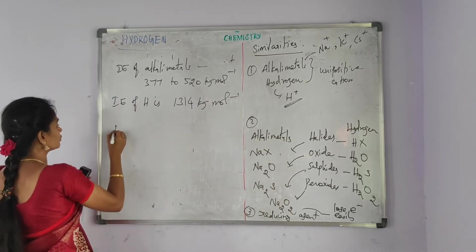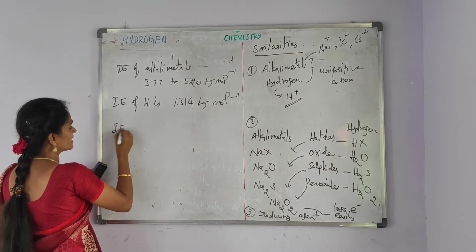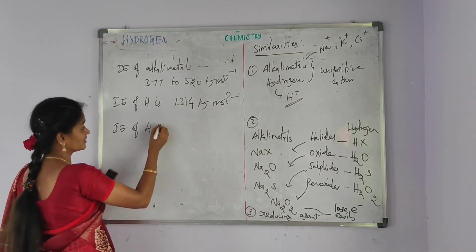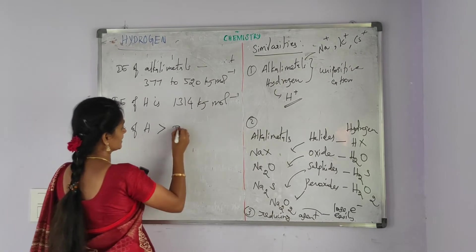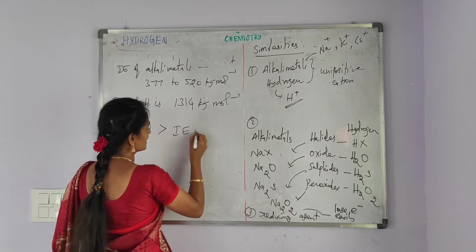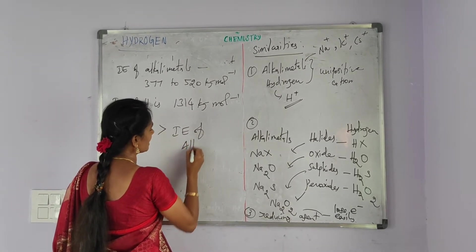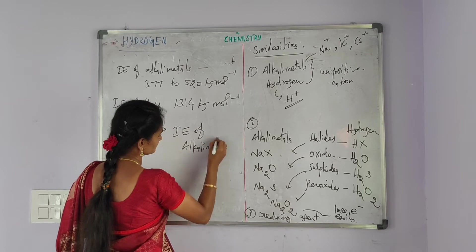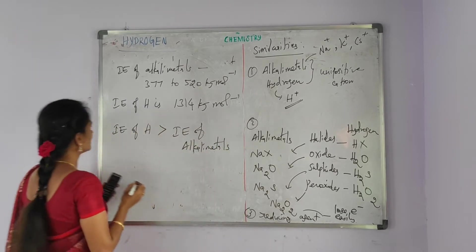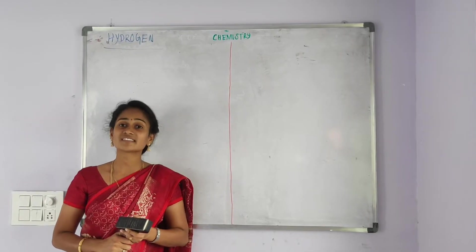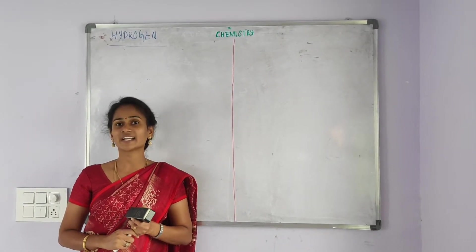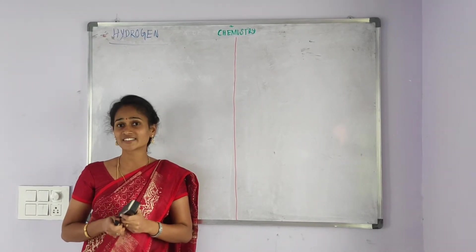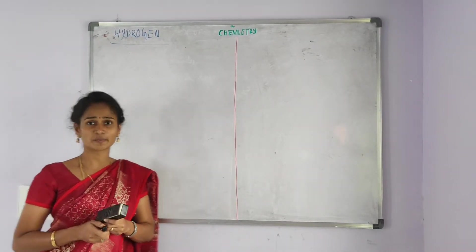The ionization energy of hydrogen is 1314 kJ mol⁻¹. So we conclude that the ionization energy of hydrogen is greater than the ionization energy of the alkali metals. The percentage availability of hydrogen gas in our atmosphere is very small.